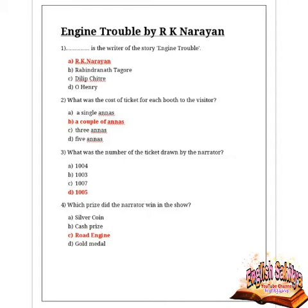Next question: what was the cost of the ticket for each booth to the visitors? Options are a single anna, a couple of annas, three annas, and five annas. Option B is the correct answer — a couple of annas was the cost of the ticket for each booth to the visitors.